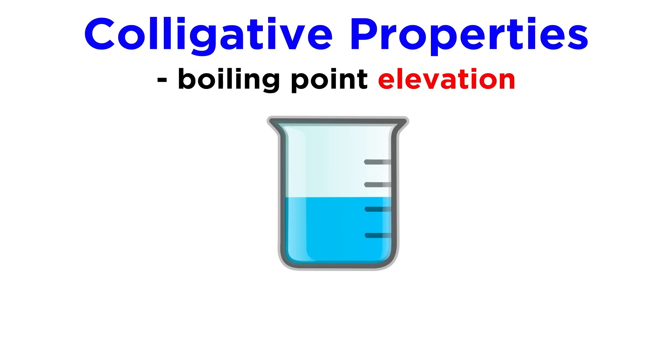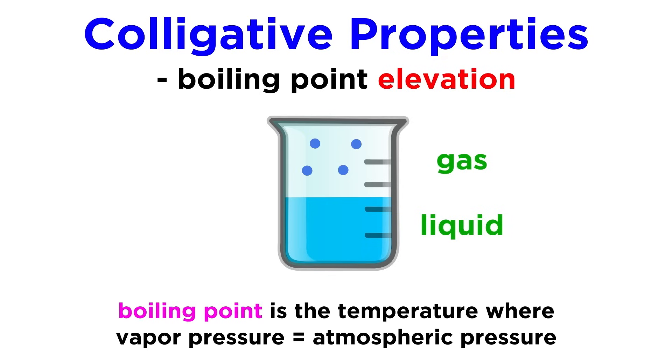Solute particles also interfere with the process of boiling, which involves an equilibrium between the liquid and gas phase. Since the boiling point of a substance is defined as the point where its vapor pressure equals surrounding atmospheric pressure,